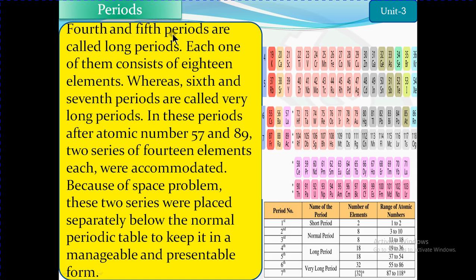The fourth and fifth periods are called long periods. Each one consists of 18 elements. We are talking about the fourth and fifth periods — total elements are 18. From potassium to krypton, and from rubidium to xenon. The atomic number ranges are 19 to 36 and 37 to 54.